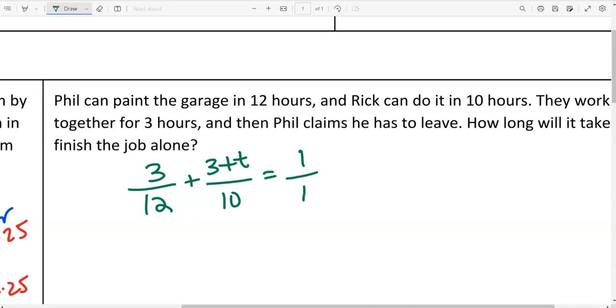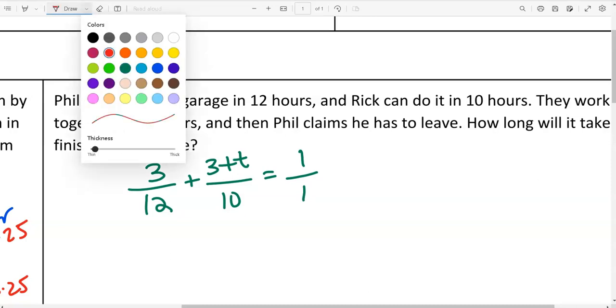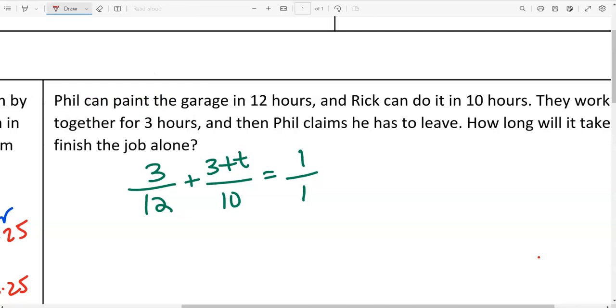So they both have the three because they both shared those three hours, but then Phil left so he didn't do any more. Rick gets the extra hours added to him equal to the job being complete. Does that make sense? The over 12 and over 10 represents the rate at how quick they are at doing it. So technically I have a denominator of a one over here. What's their common denominator? 60. We could do a 60. There's a couple ways to go about it. You could also simplify the first piece if you wanted to. There's lots of different ways to go about it.